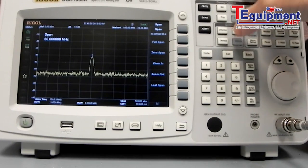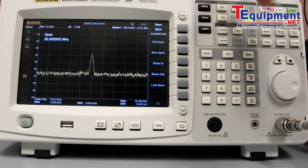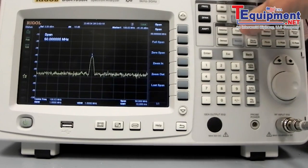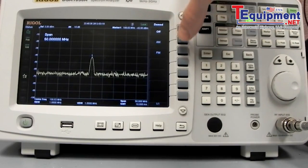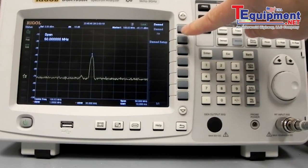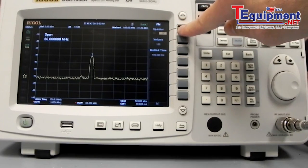And now, what we can do is demodulate that input. So as a standard feature with the DSA, we can press demod, turn the demod on to FM. Then we want to set it up. We can turn the speaker on.